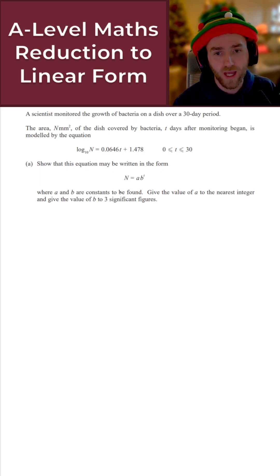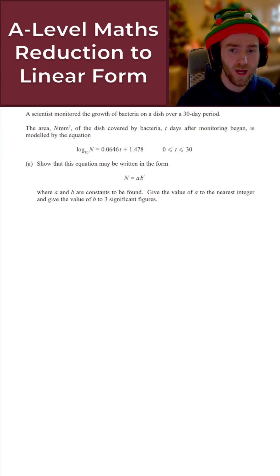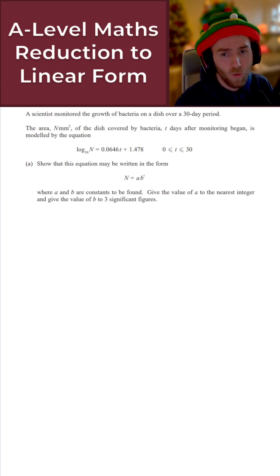So we're taking this equation and writing it in this form here. So we want to give the value of A to the nearest integer and the value of B to 3 significant figures. So where do we begin here? What I can see then is on the left-hand side, I have log N base 10. We just want N is equal to this here.